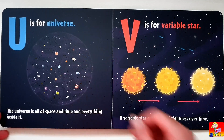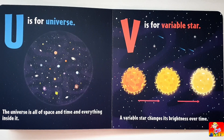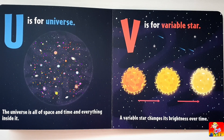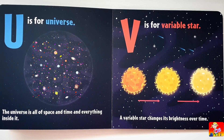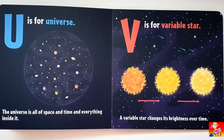U is for Universe. The universe is all of space and time and everything inside it. V is for Variable Star. A variable star changes its brightness over time.